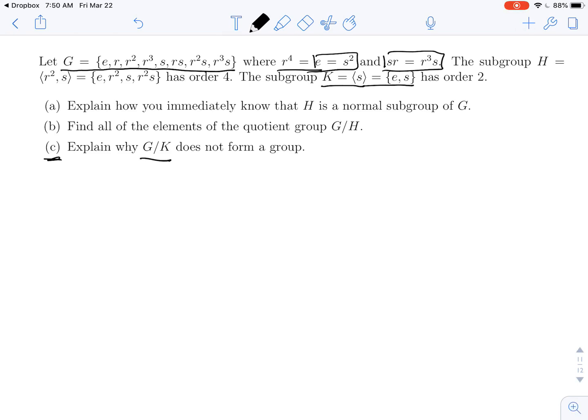And the question is, why does the set of cosets of K not form a group?